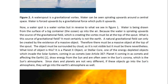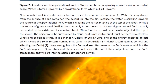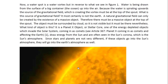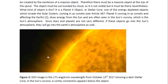You may look at Article 367 entitled, Planet X Coming in as Comets and Affecting the Earth. They draw energy from the Sun and are often seen in the Sun's corona, which is the Sun's atmosphere. Since stars and planets are not very different, if these objects go into the Sun's atmosphere, they will go into the Earth's atmosphere as well. Here you see one of these objects — you can see the gravitational vortex under it, which has caused it to connect to the Sun. This is why these objects can hover in a stationary position with respect to the Sun once this gravitational vortex connection forms between the object and the Sun.